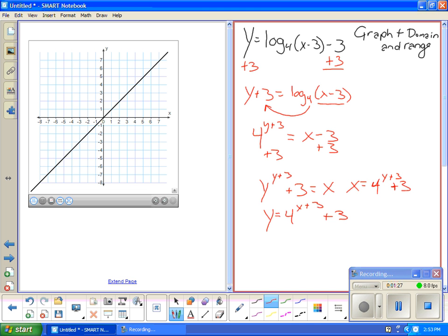So then we graph that y equals 4 to the x looks something like this, exponential. So it looks something like that. So then we shift it 3 up because of the plus 3. So 1, 2, 3. And then we shift it 3 to the left because of the plus 3 here. So 1, 2, 3. So 1, 2, 3. And then we draw it.